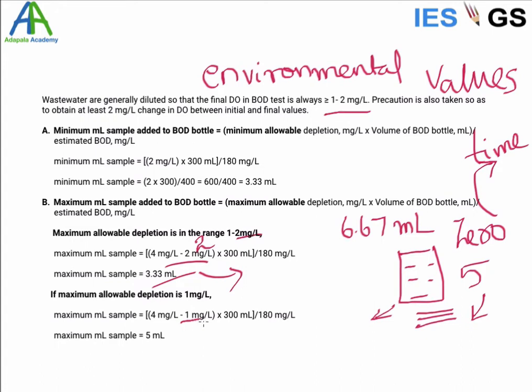That is, available oxygen is 3 mg/L and the sample size will be 5 ml. That means that if you are keeping the sample more concentrated than 5 ml, there is a chance that we cannot get the final oxygen level.